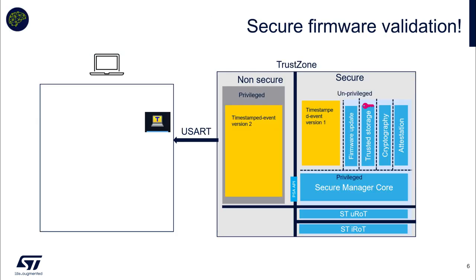After the reboot, we have in the execution slot or non-secure area the timestamp event version 2, and we still have version 1 in the secure part as a downloading slot. Then we need to accept. On acceptance, version 1 will be deleted. So let's come back to KubeMX, add the requested secure services, and add the source modifications needed.